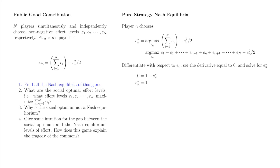The derivatives of e1, e2, and so on with respect to e little n are all zero. The derivative of e little n with respect to e little n, however, is one. The derivative of minus e little n squared over two is minus e little n.